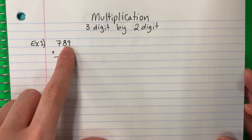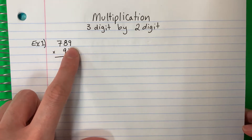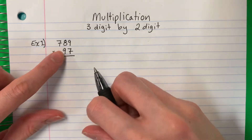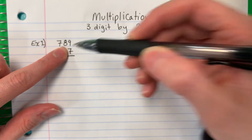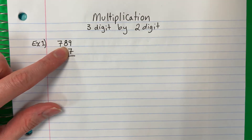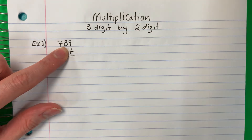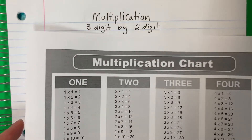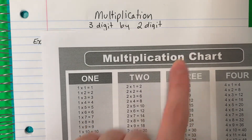So 789 times 97. Sietecientos ochenta y nueve por noventa y siete. So first, we're going to ignore the nine. Primero vamos a ignorar el nueve. We're going to focus on the seven. Vamos a enfocar al siete. Remember, we are not using the calculator. Recuerda que no vamos a usar la calculadora. We will be using our multiplication chart. Vamos a usar esta tabla.